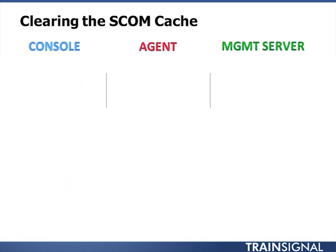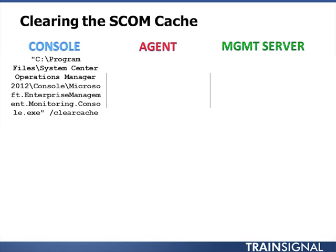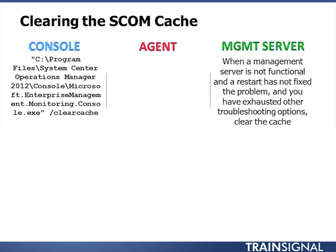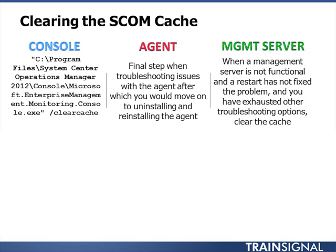Earlier I talked about clearing the Operations Manager cache. There are a couple of different reasons why you would need to do this, and a couple of different locations from which you would do it — there are different caches. If you're at the console and need to clear the cache, there's a command line option. For a management server that is not functional and a restart hasn't fixed the problem and you've exhausted all other options, clear the cache. For an agent, this is also the final troubleshooting step — the only step after this would be to remove and reinstall the agent on the monitored device.